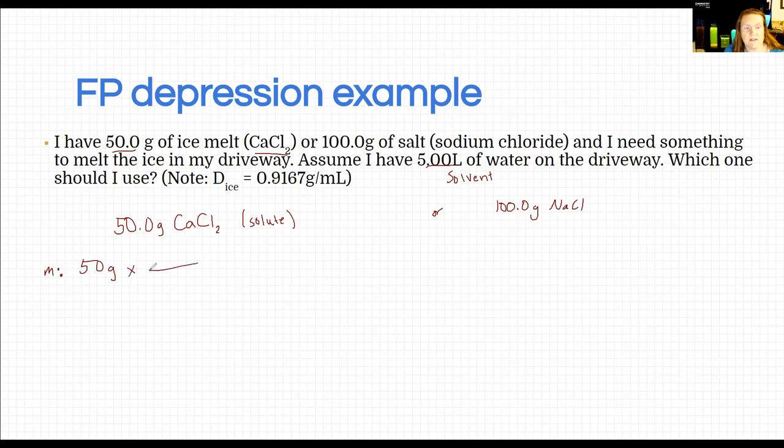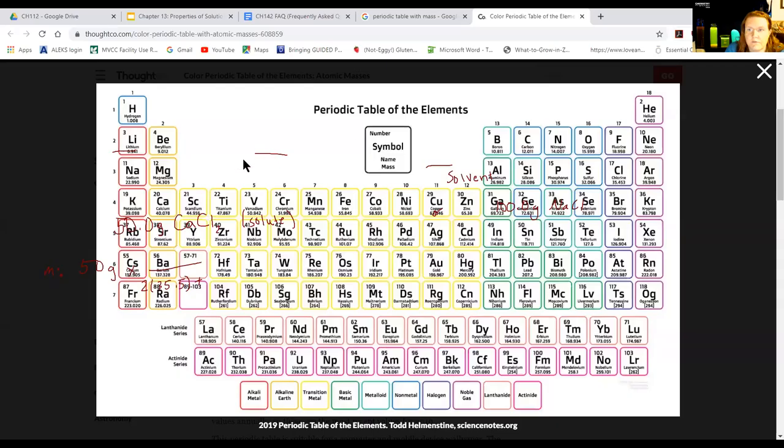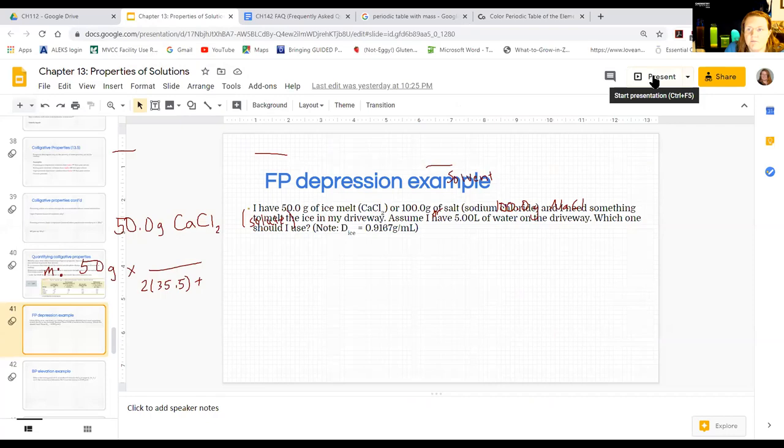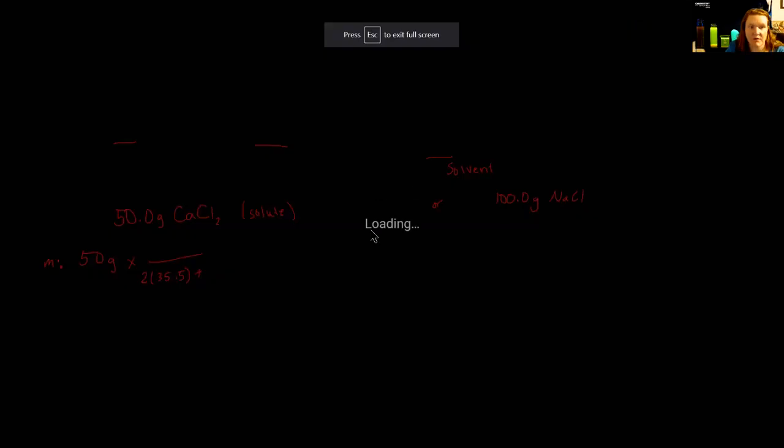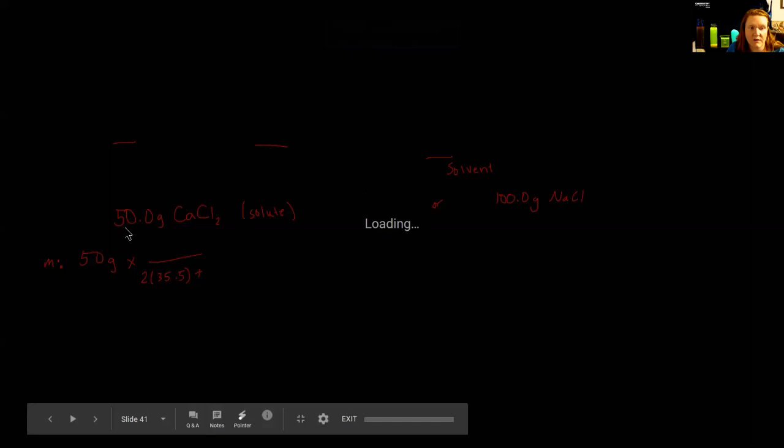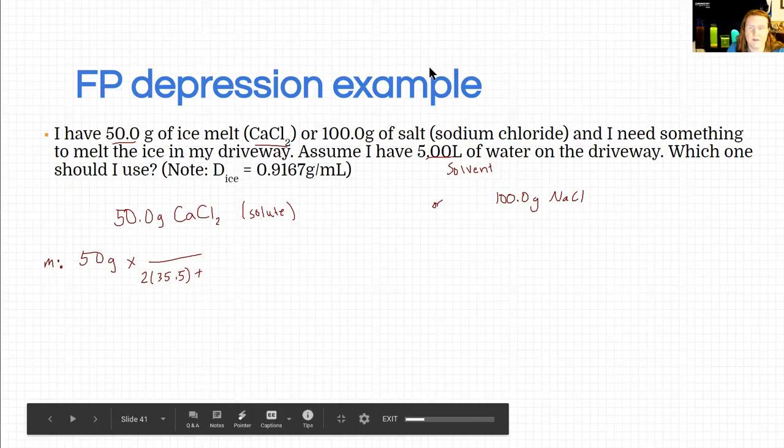To get to molality, we need molar mass. Calcium chloride - two chlorines, so that's 2 times 35.5 plus calcium, which is 40.08. We have quite a few significant figures from the problem, so I should keep at least four so I'm not cutting off my sig figs.